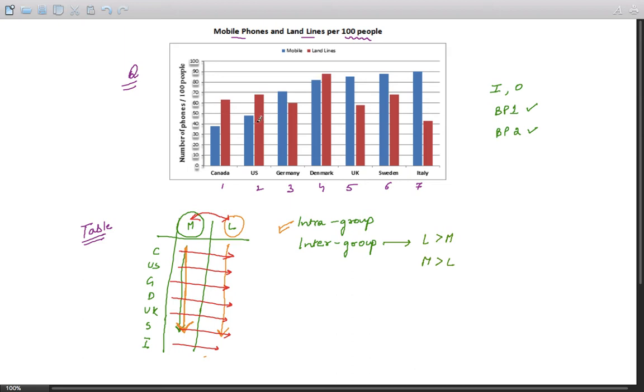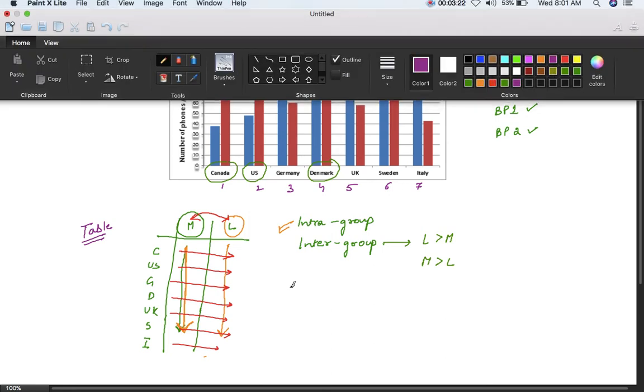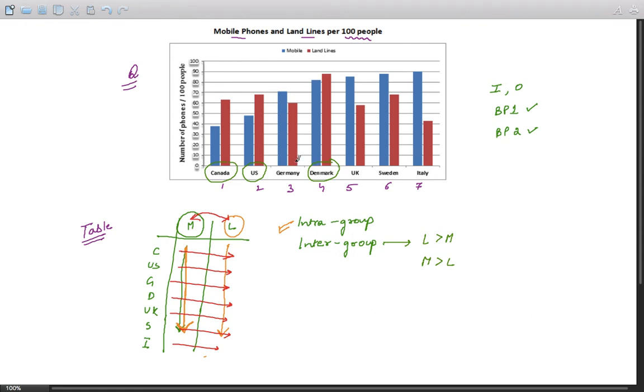What are those countries? Countries number 1, 2, and 3—these three have landline usage more than that of mobile phones. You have to write one or two sentences on them. Then write about these countries: Germany, United Kingdom, Sweden, and Italy. These four countries have mobile phone usage more than landlines. You have to write one or two sentences on them as well.